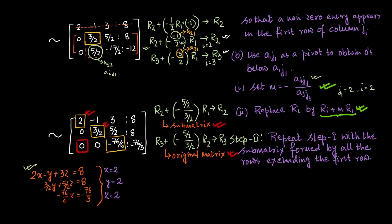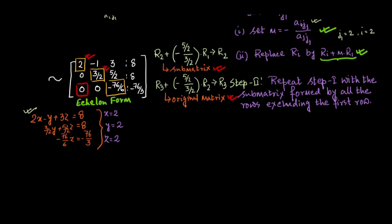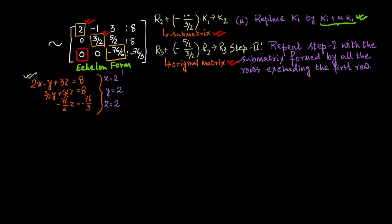Since the echelon system was obtained from the original by elementary row operations, both systems are equivalent and have the same solution: x equals 2, y equals 2, z equals 2 — a unique solution. We can further simplify to row-canonical form. A row-canonical matrix is an echelon matrix where each pivot equals 1 and is the only non-zero element in its column.